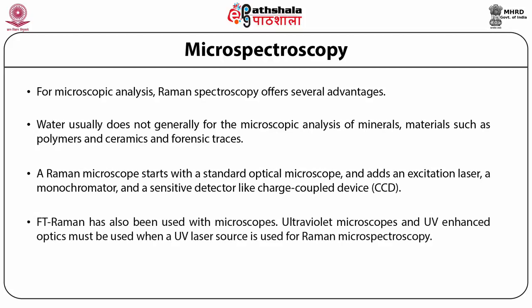A Raman microscope starts with a standard optical microscope with an excitation laser, a monochromator, and a sensitive detector like a charge-coupled device (CCD). FT Raman has also been used with microscopes. Ultraviolet microscopes and UV-enhanced optics must be used when a UV laser source is used for Raman microspectroscopy. Even when materials are present in traces, we are able to determine the quantity and quality of the material present — making this very useful for forensic applications.